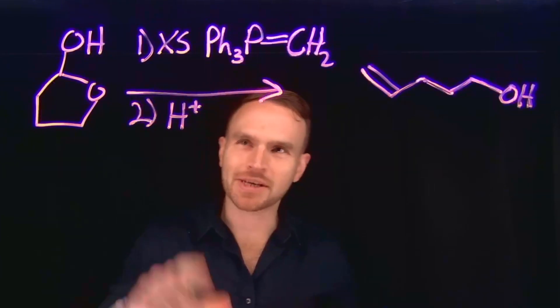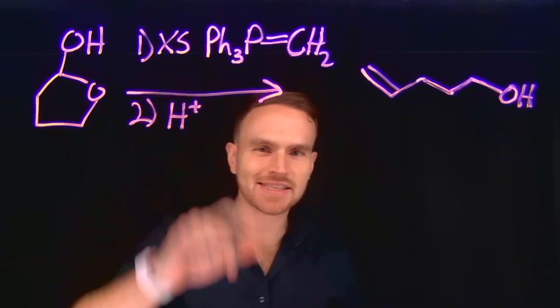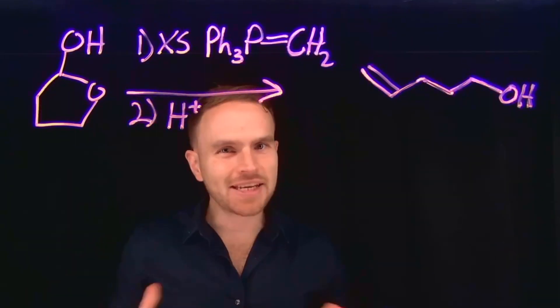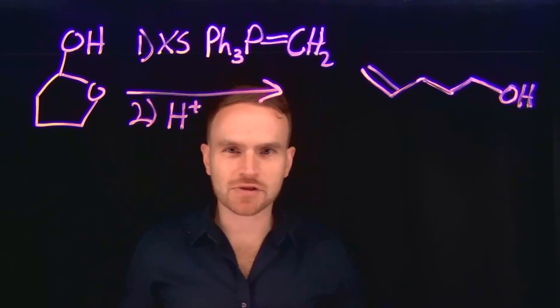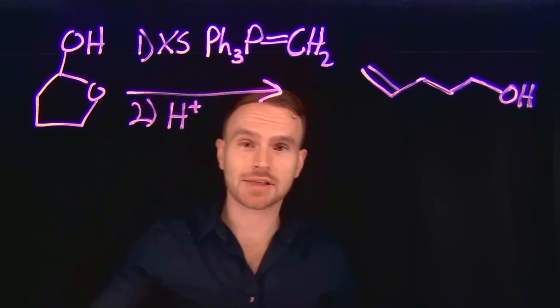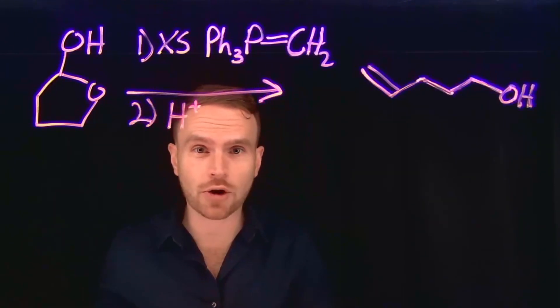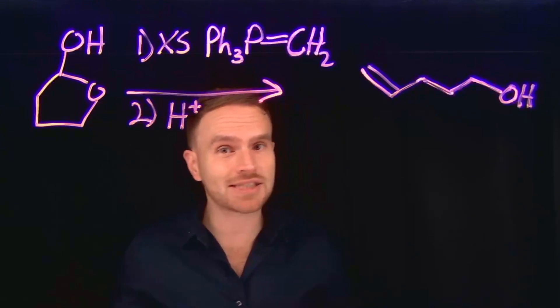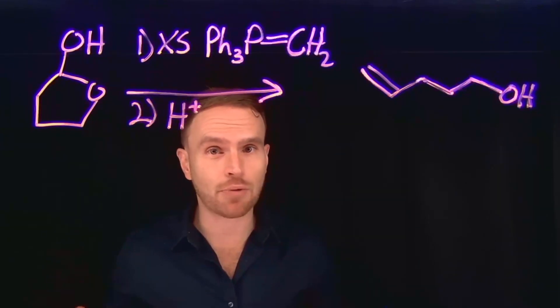This is a really interesting reaction because notice that you're told that there's an excess amount of this Wittig reagent. Anytime that you see an excess amount of some reagent, it's likely that your mechanism should include it reacting more than once. And in this case, what's first going to happen is the Wittig reagent is not going to act to transform a carbonyl compound into an alkene. But instead, the first step is actually going to be deprotonation.